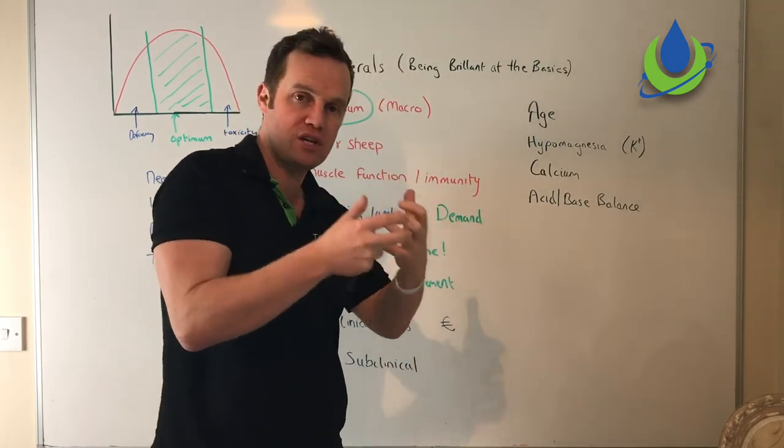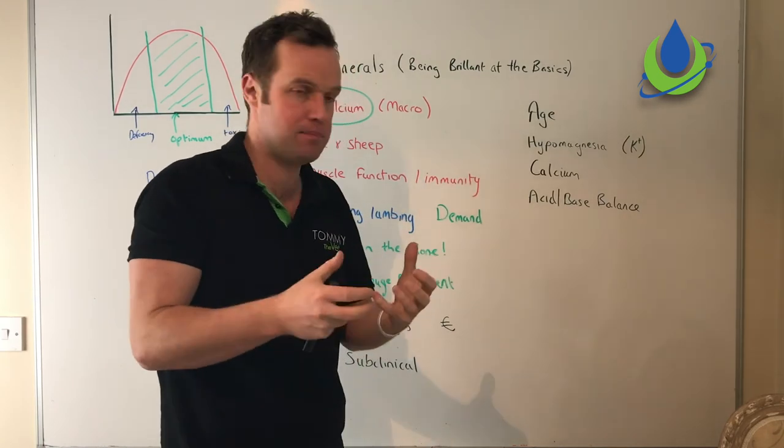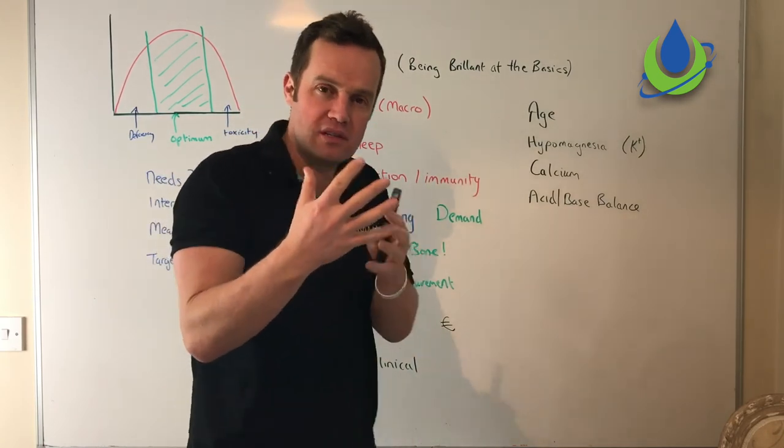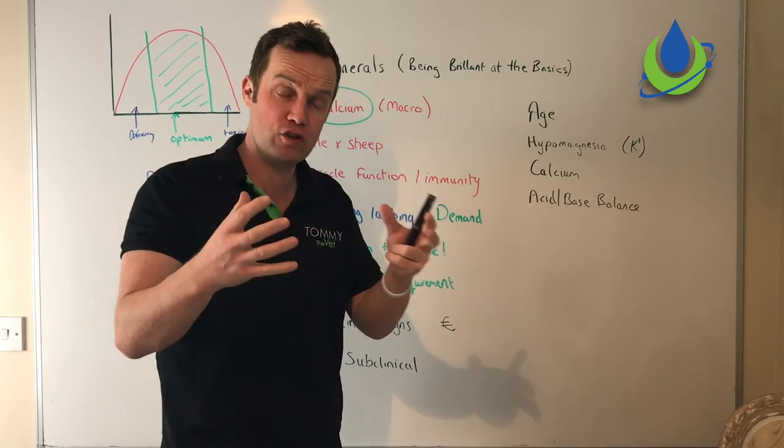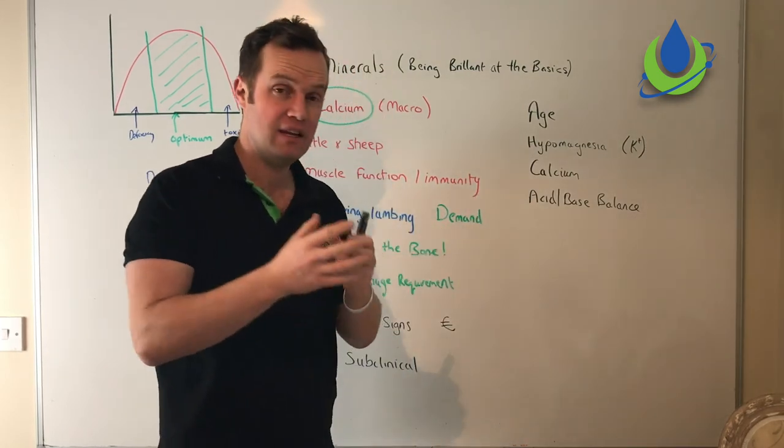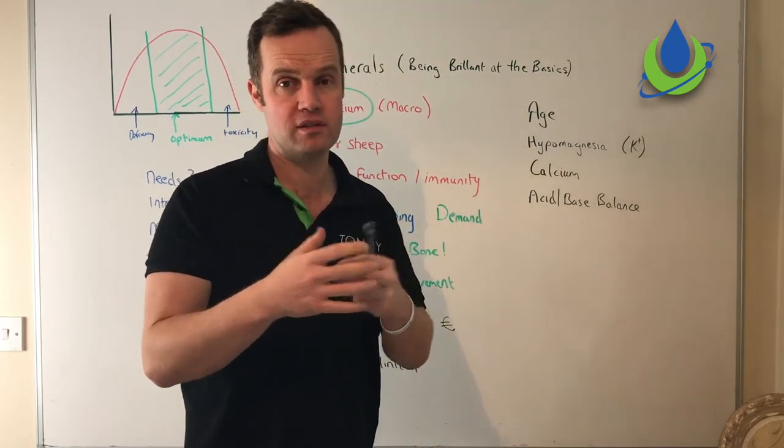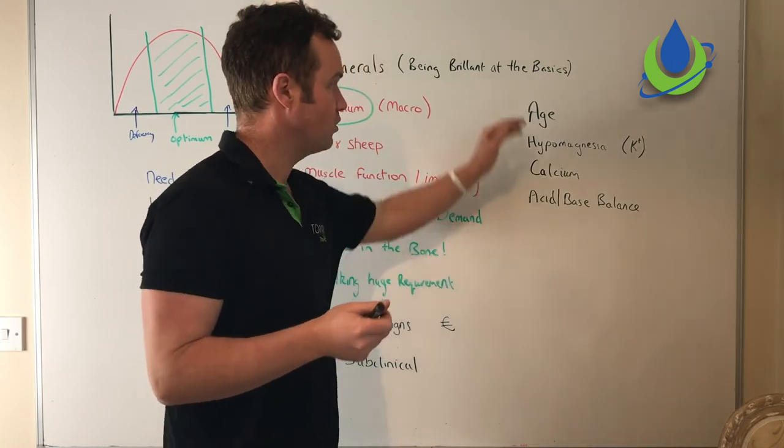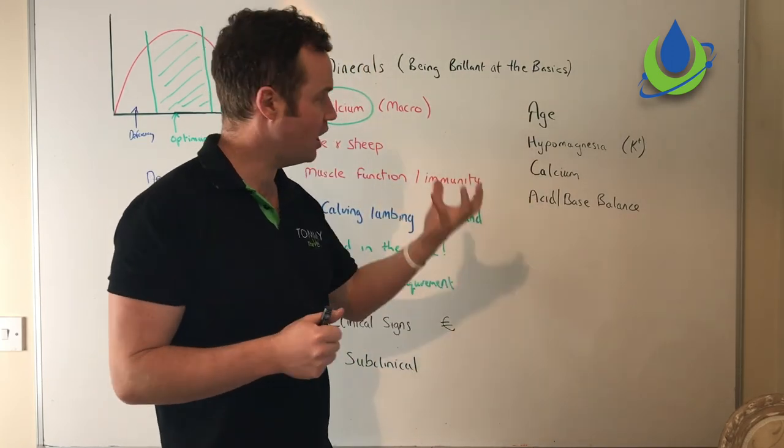And finally, we talk about DCAD, which is dietary cation-anion balance, and that's the acid-base balance. So if we have acidic rumens and acidic blood, we can flush the bottom - the cow will flush more calcium out. And again, if we have more alkalotic rumens, it slows that process down.